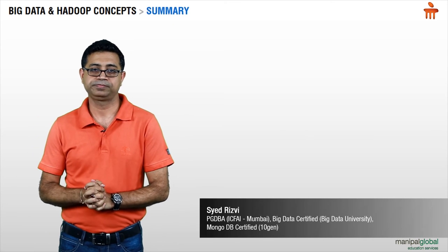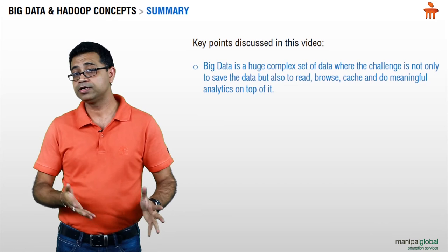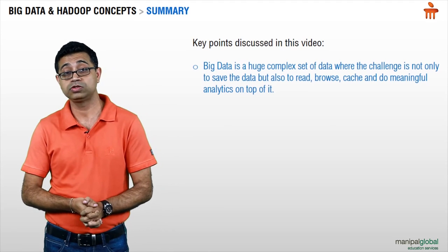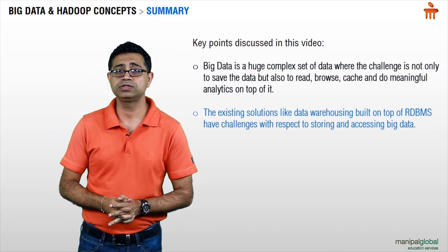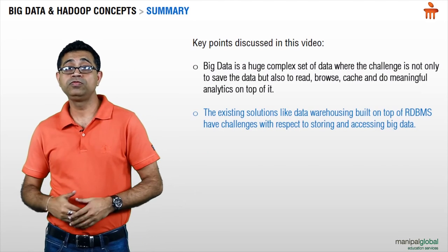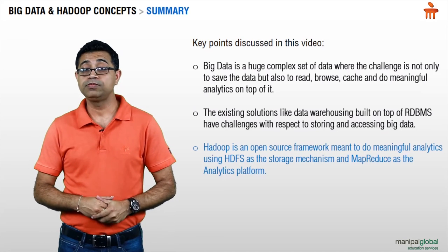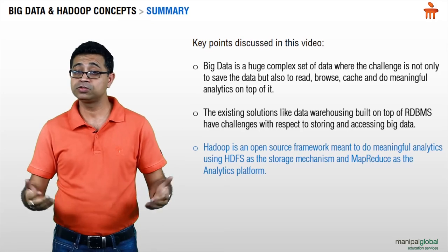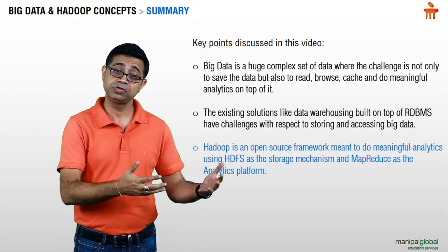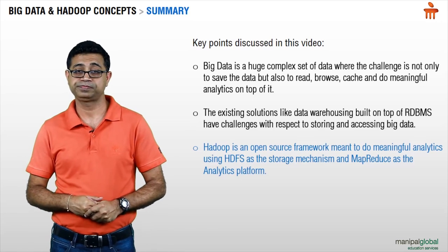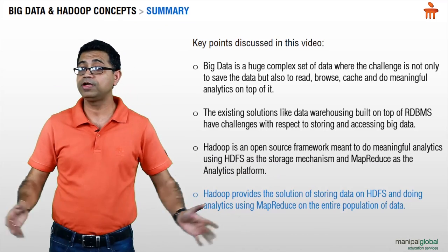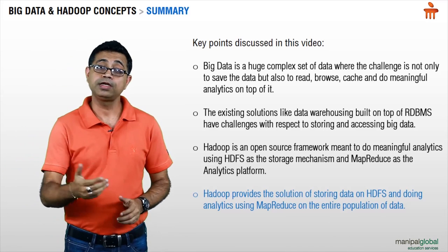So let's see what we've understood in this unit. We've understood what big data is and how big data is huge and complex, making it a challenge to access, read, cache, and store it. We've seen the existing solutions like data warehousing built on top of RDBMS and the challenges with those. We've moved to Hadoop as an open-source framework and understood what Hadoop is — how it is meant to do full analytics using the entire population of the data. We've seen how Hadoop has a MapReduce algorithm built inherently in the framework itself, and how Hadoop provides a solution for not only storing data, no matter how huge the file is, but also providing frameworks to do analytics on top of it.